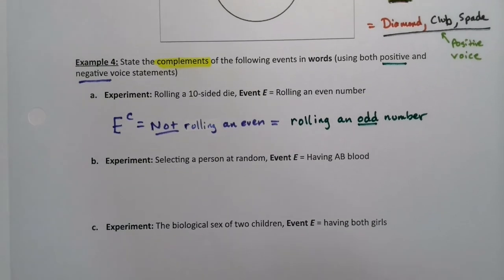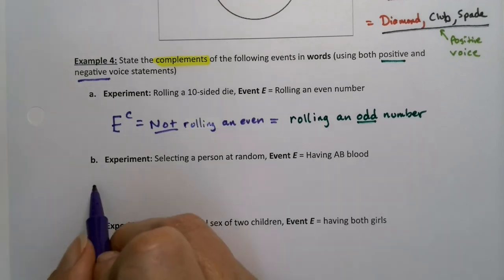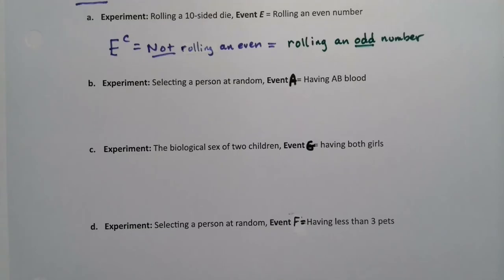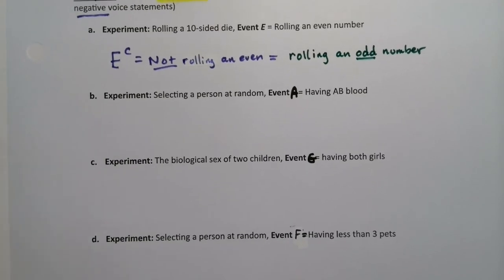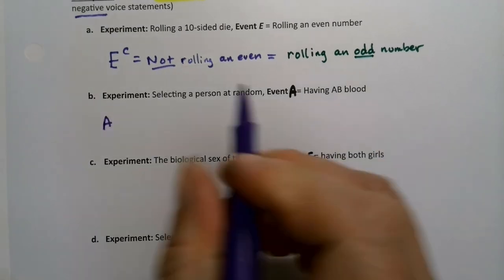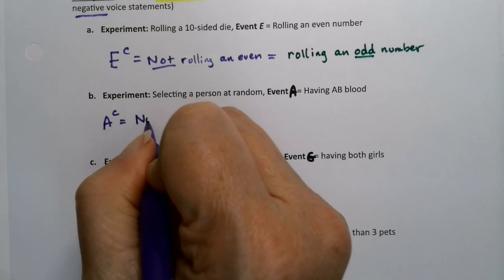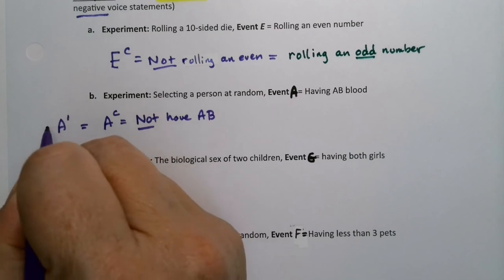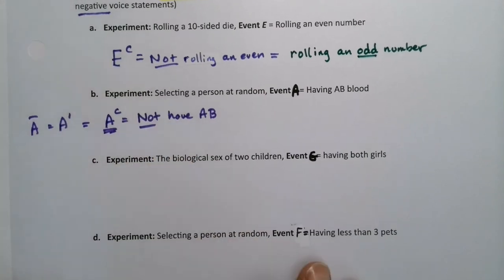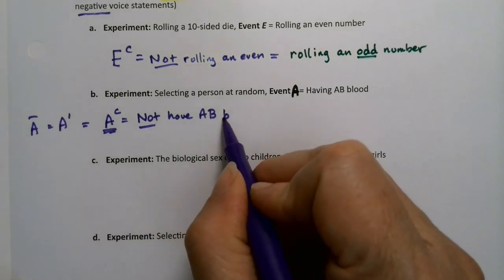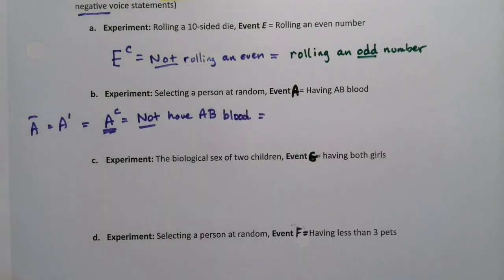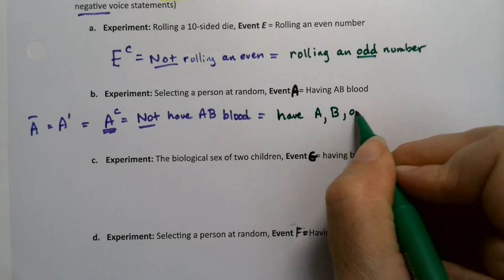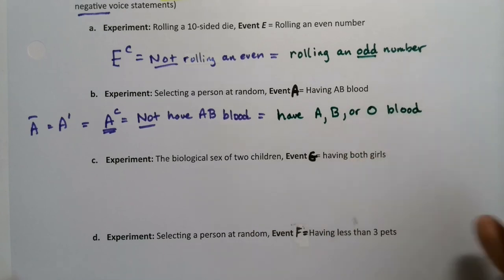Okay. Next. What about AB blood? So event E, I don't know why I named all these E I'm going to change them up and call them different things. So I'm going to call this one A there just to give us some variety. So we've got something different to look at. So event A is having AB blood, then A complement would not have AB blood. And if you want, you could write A prime or A with a little bar on it, but the one we use the most is A with a little C after it. And it's a little higher up. Well, if you do not have AB blood, what do you have? You have A, B, or O blood. Those are the four most common types.